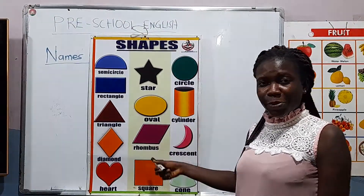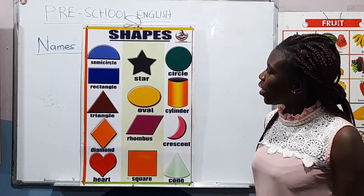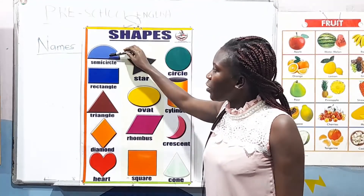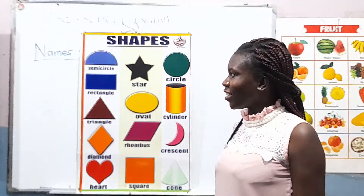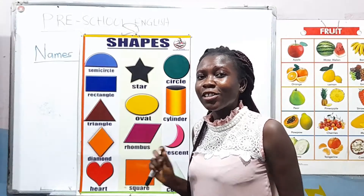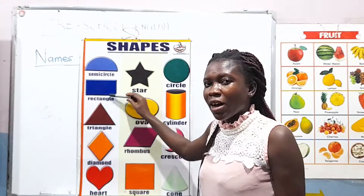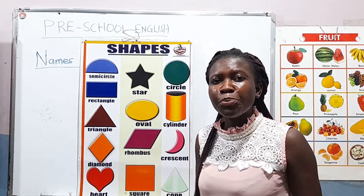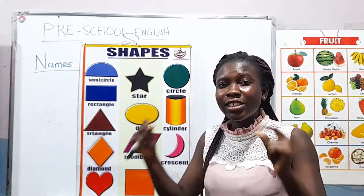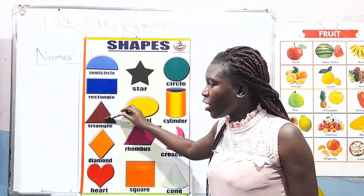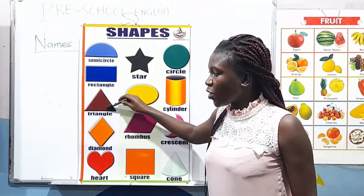Now let's come back to the colors. Our semicircle here has a light blue color. Then the rectangle has a deep blue color. The triangle has a brown color.